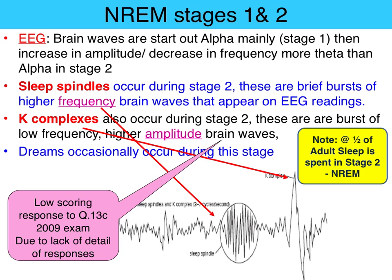Two common characteristics of stage 2 of non-REM are sleep spindles and K-complexes. To distinguish one from the other: sleep spindles are high frequency, whereas K-complexes are high amplitude.